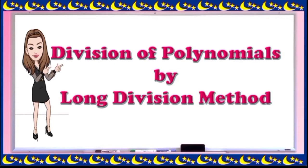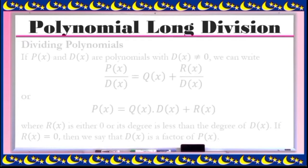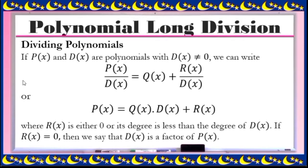This video is about division of polynomials by the long division method. For the long division method of polynomial expressions, if p(x) and d(x) are polynomials with d(x) not equal to 0, where p(x) is our dividend and d(x) is our divisor — and the divisor is not equal to 0 — we can write it in this form.